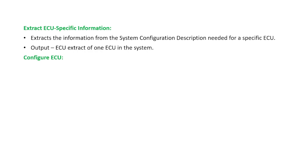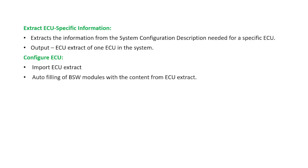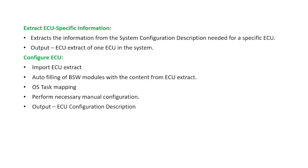As part of the configure ECU step, the AUTOSAR integrator first imports the ECU extract. Then the configuration tool autofills all the BSW module information from the ECU extract. The integrator has to map the OS tasks with the runnable entities, and perform necessary manual configurations which are required — like RTE, OS, MCAL, ECM, and BSWM. After this manual configuration is done, the output of this step would be the ECU configuration description. This ECU configuration description file is required for generating the BSW modules.